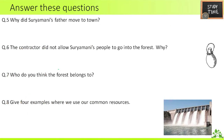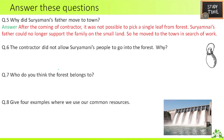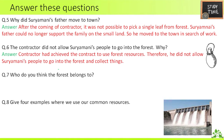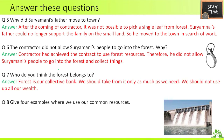Fifth — why did Suryamani's father move to town? After the coming of the contractor, it was not possible to pick a single leaf from the forest. Suryamani's father could no longer support the family on the small land, so he moved to town in search of work. Sixth — the contractor did not allow Suryamani's people to go into the forest — why? The contractor had achieved the contract to use forest resources, therefore he did not allow Suryamani's people to go into the forest and collect things.